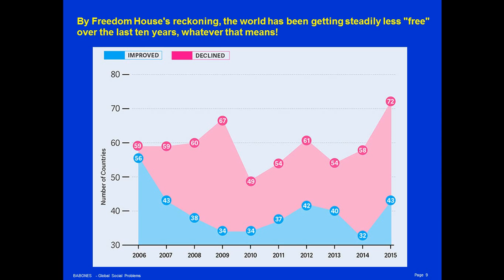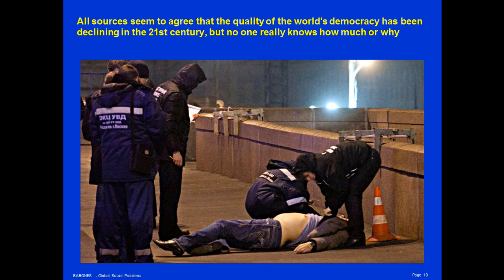Ten years of declining average freedom suggests a pretty bad situation, and that does confirm the results from Polity4, which also shows declining quality of democracy over the last 10 years. All sources — both quantitative and qualitative, including anecdotal evidence — seem to agree that the quality of the world's democracy has been declining in the 21st century, but no one really knows how much or why.